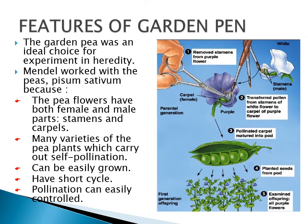Coming to the features of the garden pea plant, Mendel selected Pisum sativum. The pea flowers have both female and male parts — that is stamens and carpel. Many varieties of pea plants carry out self-pollination. It can be easily grown, it has a short life cycle, and pollination can be easily controlled.